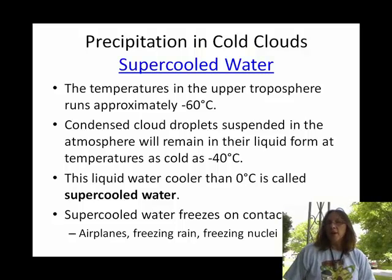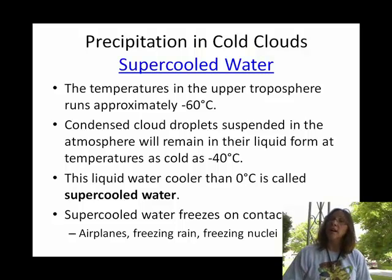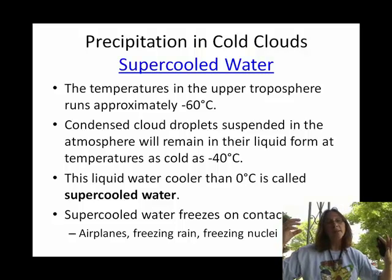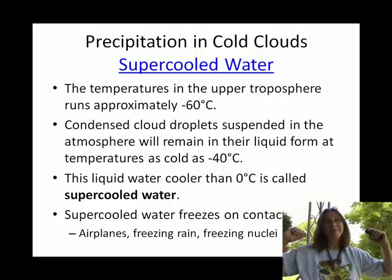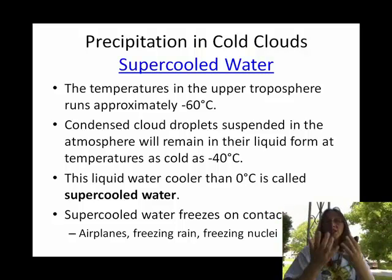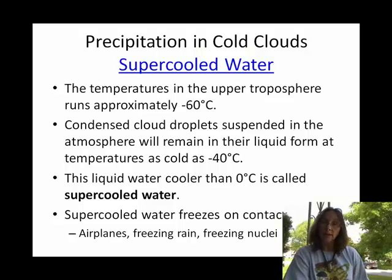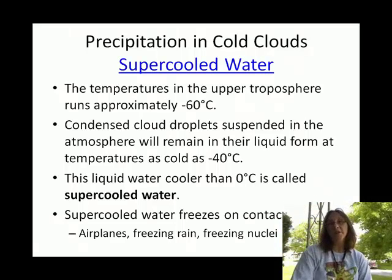Before we talk about water falling from a cloud as rain, I want to talk about what happens within a cloud: water vapor forming, and super cooled water forming snow and ice crystals because it's so cold. A lot of times we get rain down here from a cloud where, up there in the cloud, it started out as snow. So I'm going to talk about something called the Bergeron process.